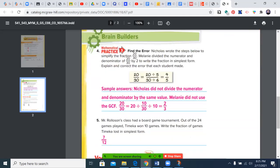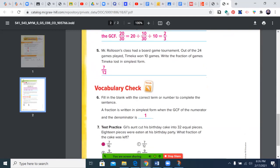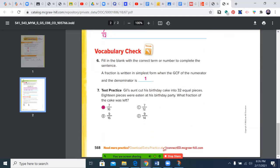Our error here—Nicholas did not divide the numerator and denominator by the same value. Melody did not use the greatest common factor. Then we have a vocabulary check. A fraction is written in the simplest form when the greatest common factor of the numerator and denominator is one.